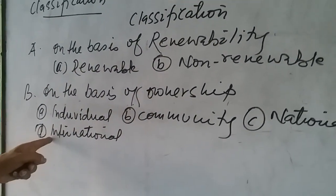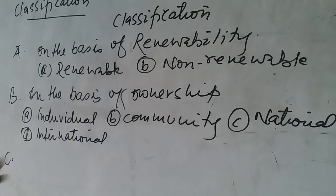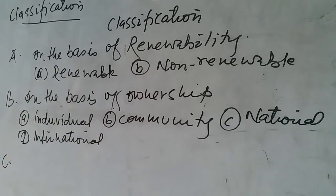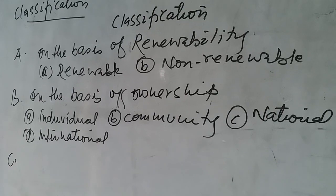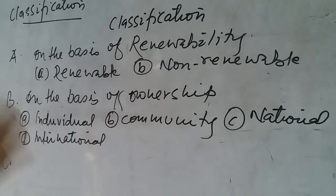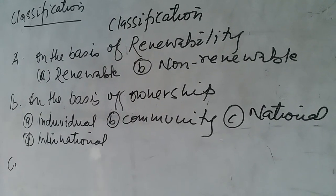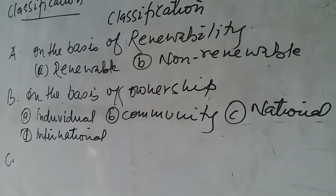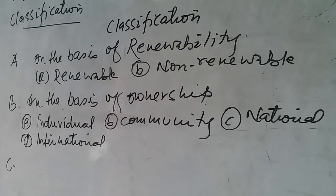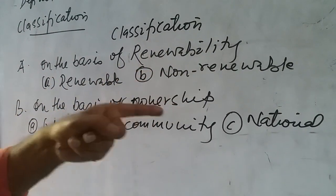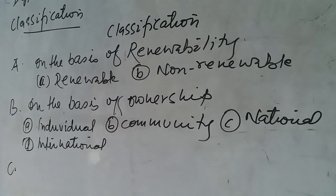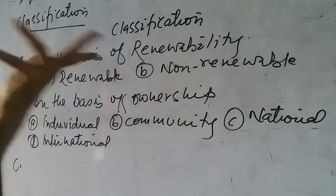International resources are the most important resources. Examples include the atmosphere, space, Antarctica, and oceans. Any country can use them, but only after taking permission from the United Nations. Without permission from the United Nations, no country can go to Antarctica, use oceans for economic purposes, or go to space — it is totally banned without getting permission from the United Nations.